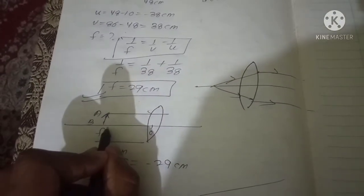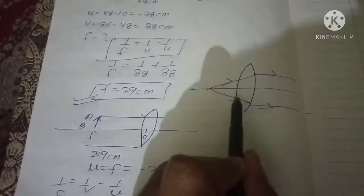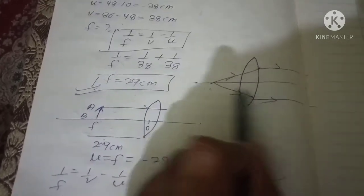Now we know that 29 is the focal length, and directly we can also write: if the object is at focus then image will be formed at infinity.